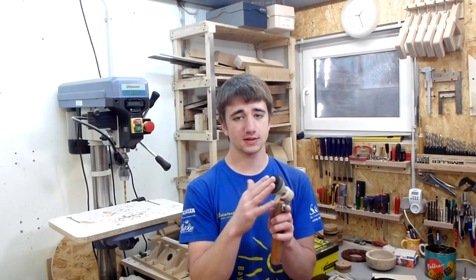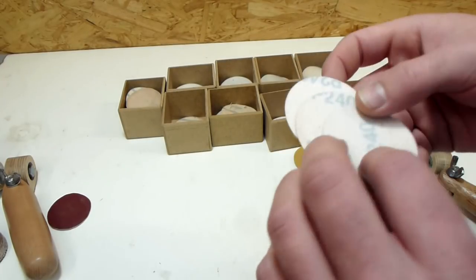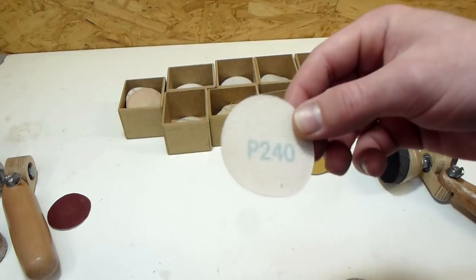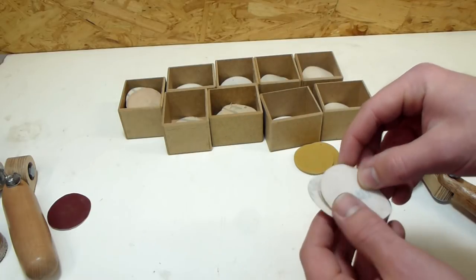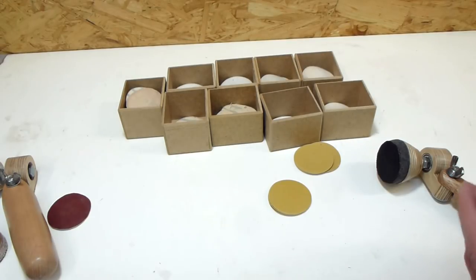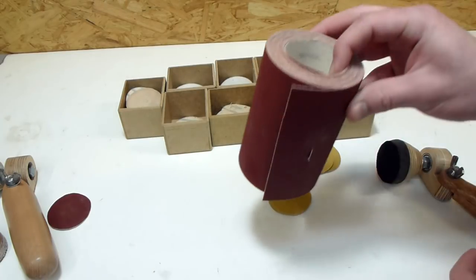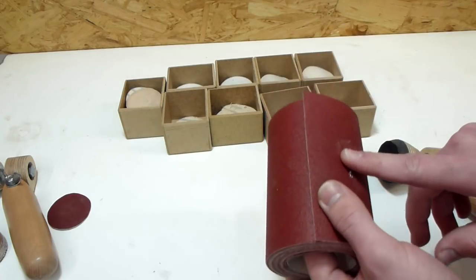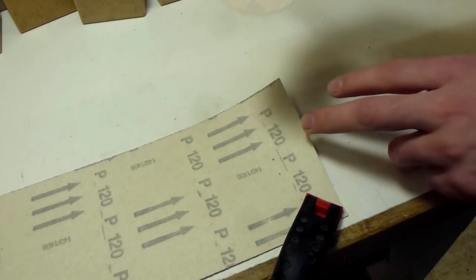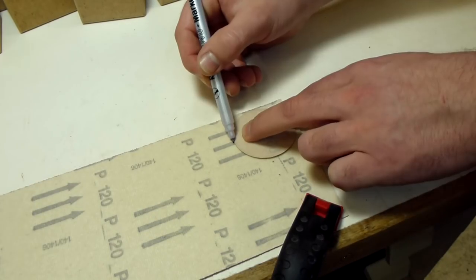The last thing missing is the sandpaper. What you need are these hook and loop sanding discs and they are available in every grit and they are not that expensive. But it's actually much cheaper to cut them out yourself. Therefore I need a hook and loop sandpaper roll. This is the same roll that I use on my drum sander. I can just take one of the premade discs and trace around it.